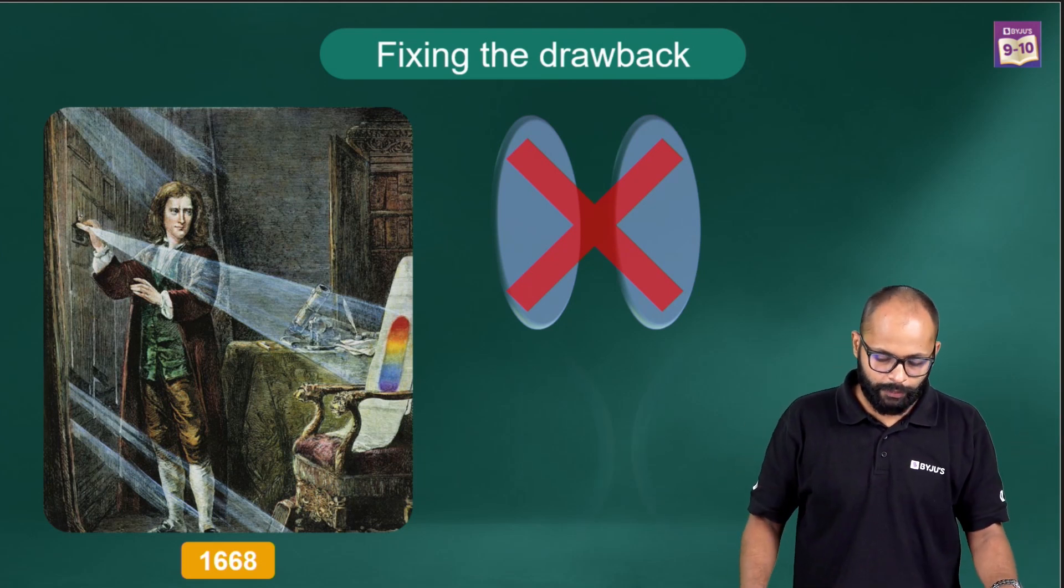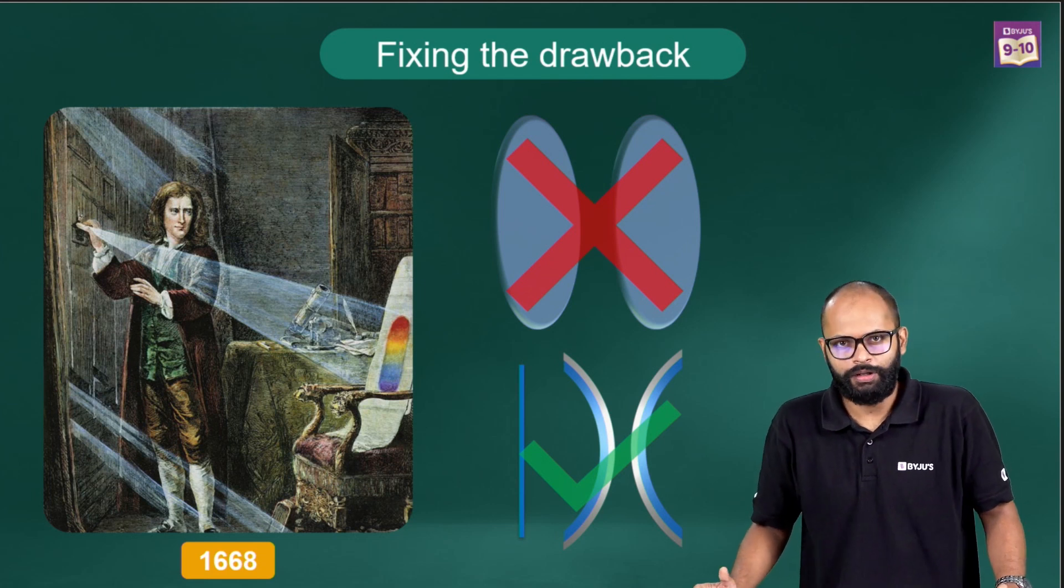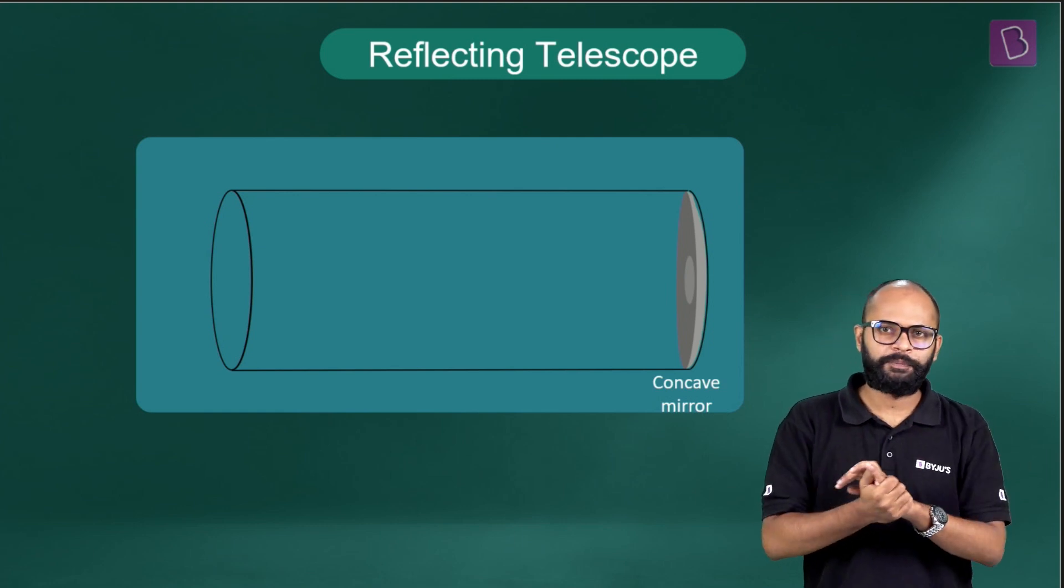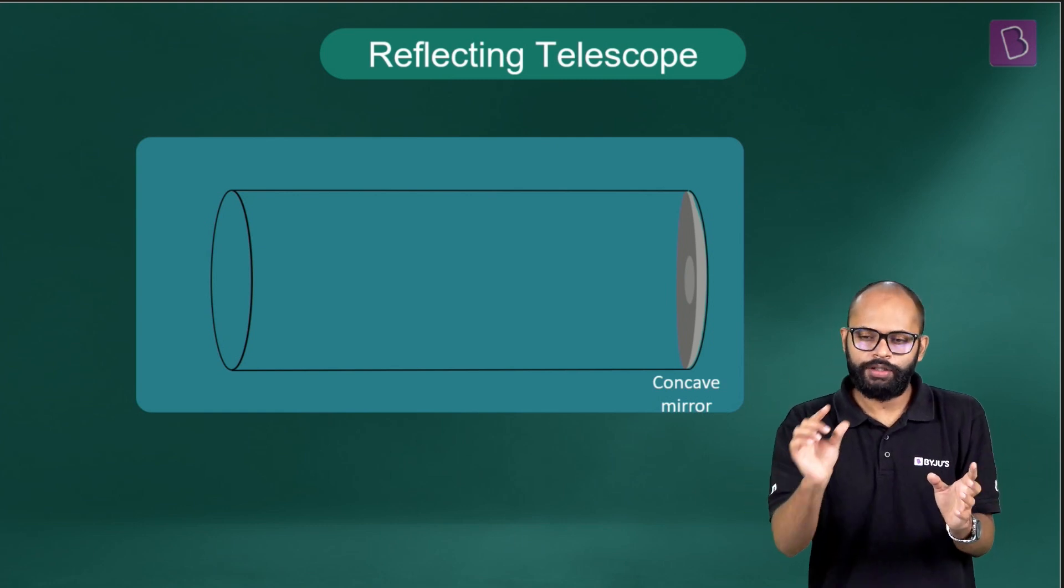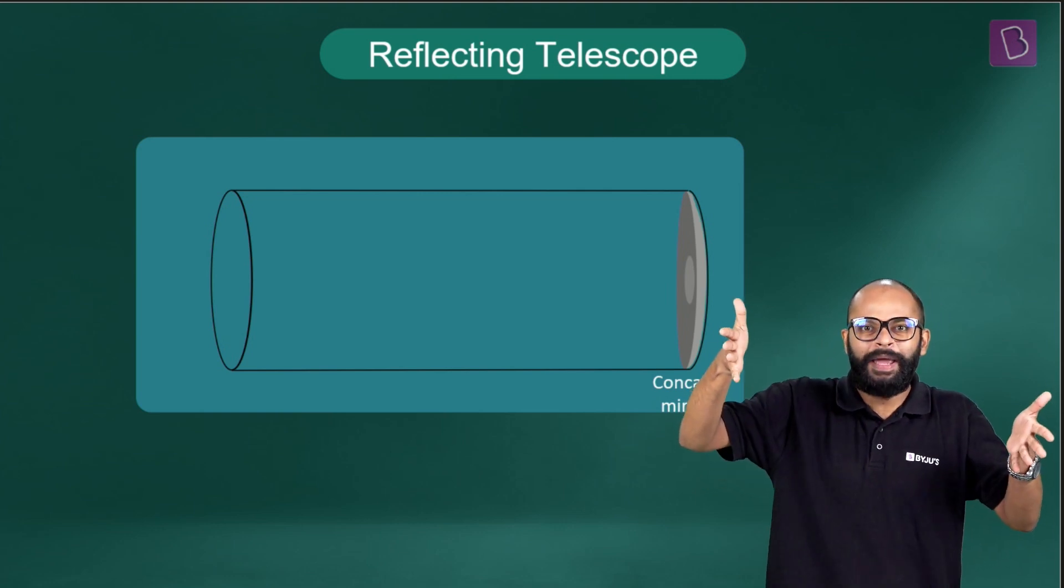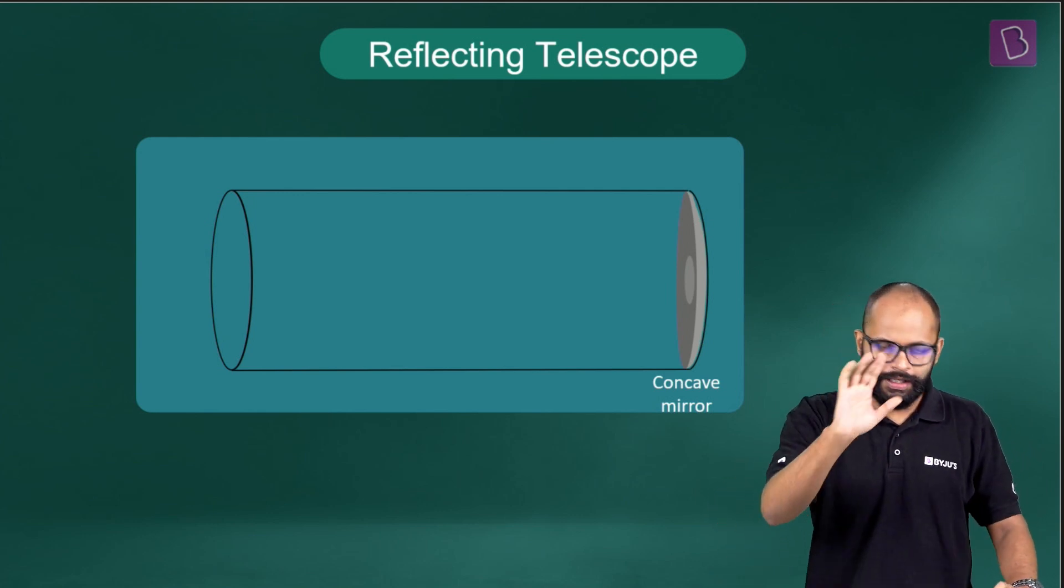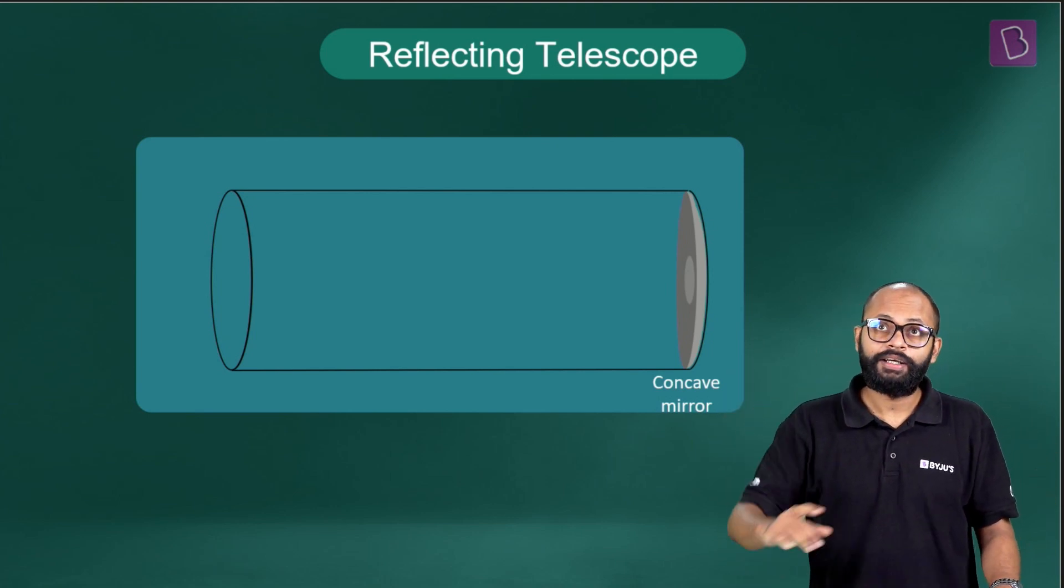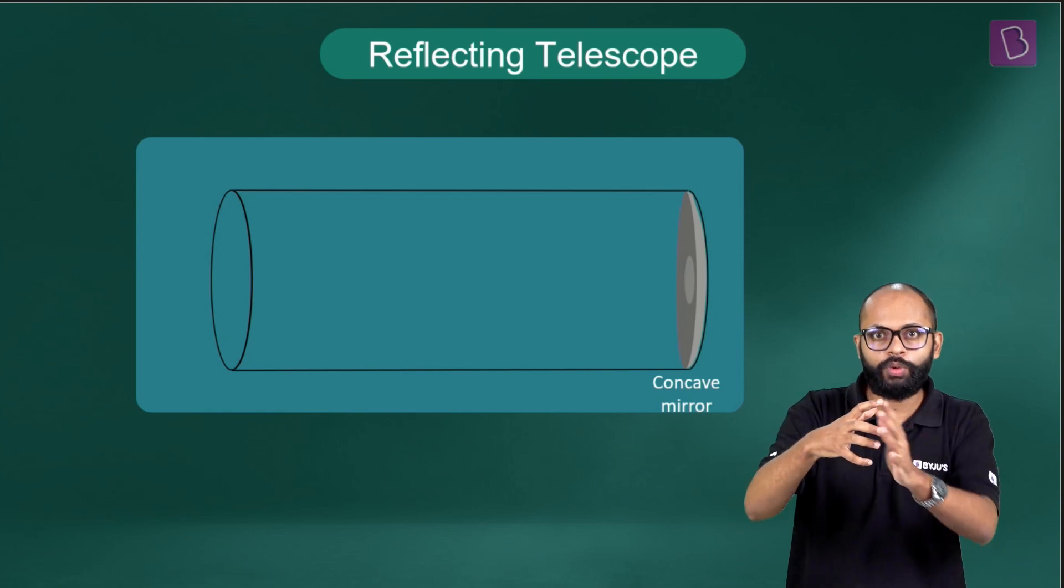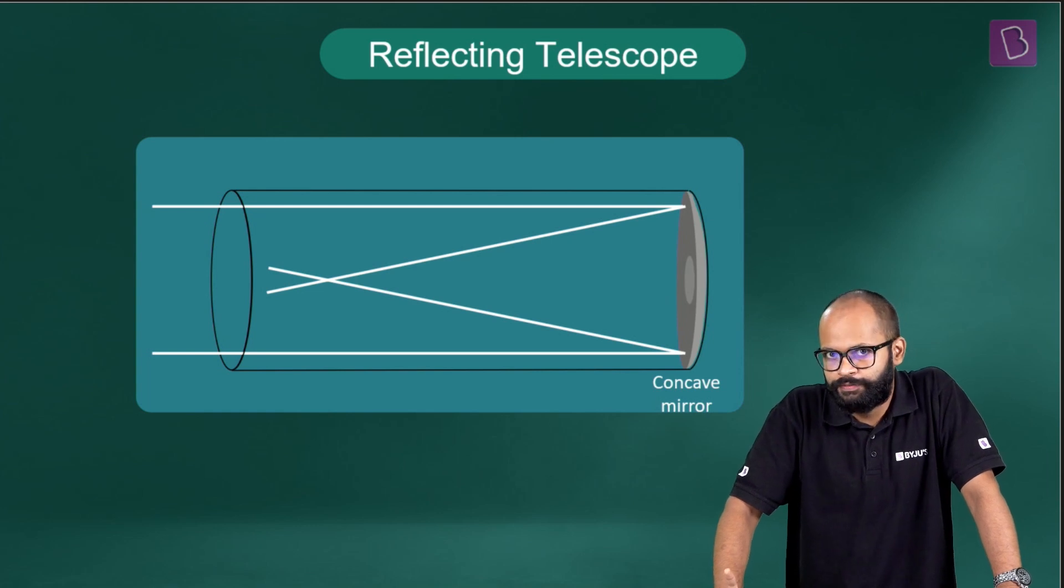He said no to lenses. Let's use mirrors, the spherical or curved mirrors. One good thing about mirrors is they can be made using small small mirrors and joining them, creating a big concave mirror. This is difficult in lenses. So he made a very big concave mirror so that light from very far objects could converge at a point, and that's where this huge concave mirror helped us.